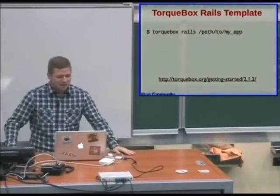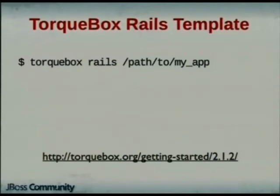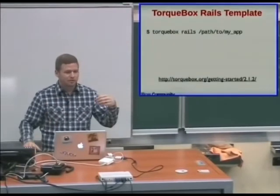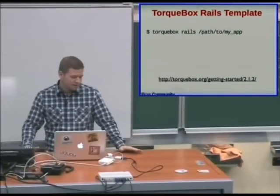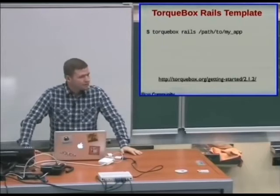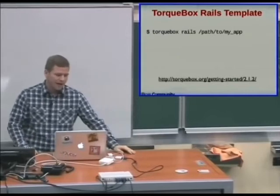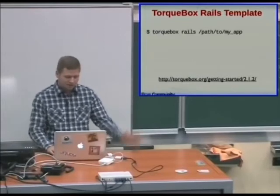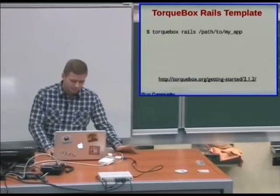After you install TorqueBox, you can optionally apply a Rails template — for Rails applications only. This will change your Rails application session storage to use TorqueBox session storage, giving you clustered session replication. Instead of having to use the database or memcache, you can use our session replication. If a server crashes, the user will never know — the session is still there on the next server. The Rails cache is also set up to use TorqueBox cache. This step is completely optional.